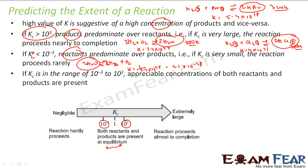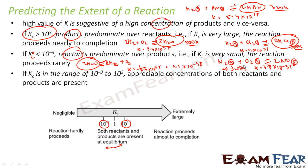Another example: N₂(g) + O₂(g) ⇌ 2NO(g) at 300 Kelvin. Here K is 4.8×10⁻³¹, which implies that very few nitrogen and oxygen gas molecules will combine to form NO — very few — because Kc is extremely small.